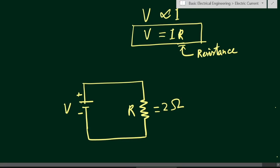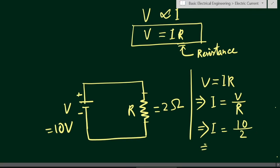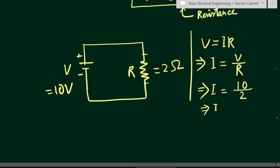Now let us find out the current. Suppose the resistance is 2 ohms and the voltage is 10 volts. As per Ohm's Law, V = IR, and since we assume temperature is constant, this resistance is not changing. From this relation, I = V / R, so the current through this resistor is I = 10 volts divided by 2 ohms.